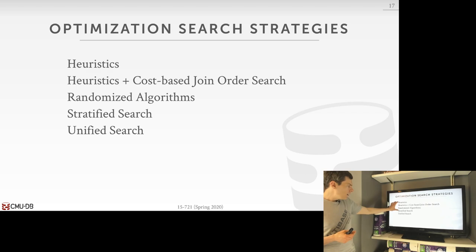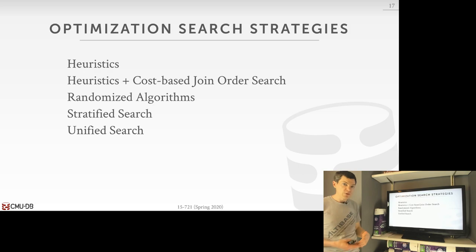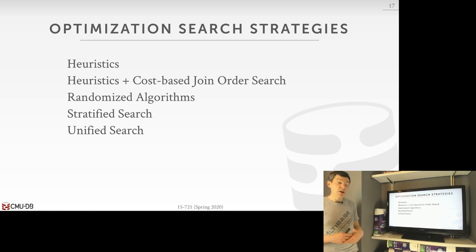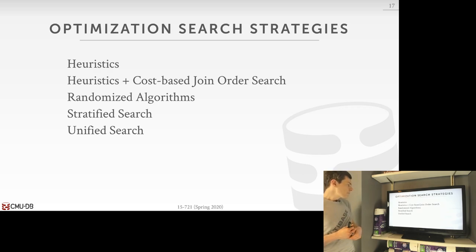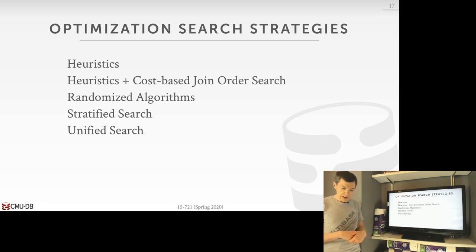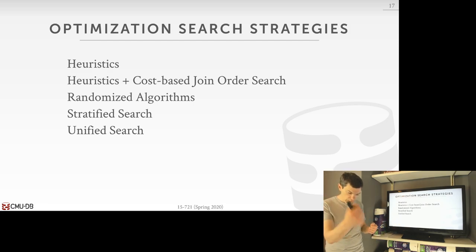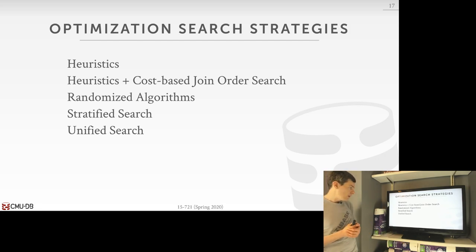Heuristics are worth talking about because this is what you'll see when people first build a new system — they won't have a cost-based search model, they'll use heuristics. Heuristics are still widely used today. The unified search and stratified search are where we'll end up: we'll get to the Volcano optimizer today, which will segue into the next lecture when we talk about Cascades in more detail.